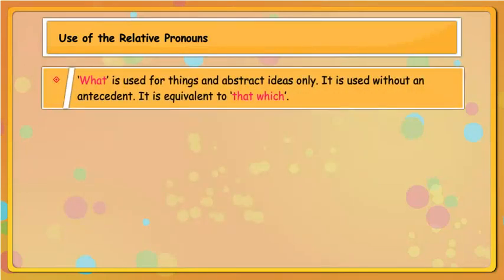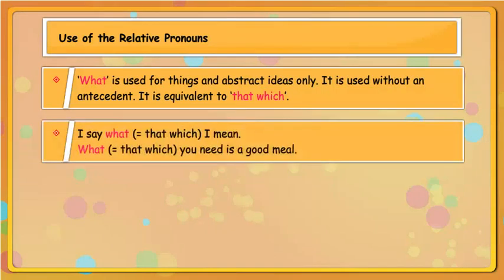'What' is used for things and abstract ideas only. It is used without an antecedent. It is equivalent to 'that which'. I say what — that which — I mean. What — that which — you need is a good meal.